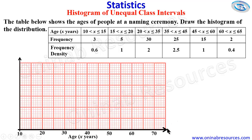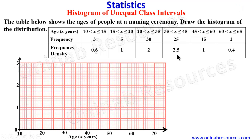The horizontal axis is labeled 'Age in years.' For the vertical axis, this is the frequency density. The highest frequency density we have is 2.5, so we use 2 centimeters to 1 unit. The axis goes 0, 1, 2, 3 — we will be able to accommodate 2.5. That is the frequency density axis.